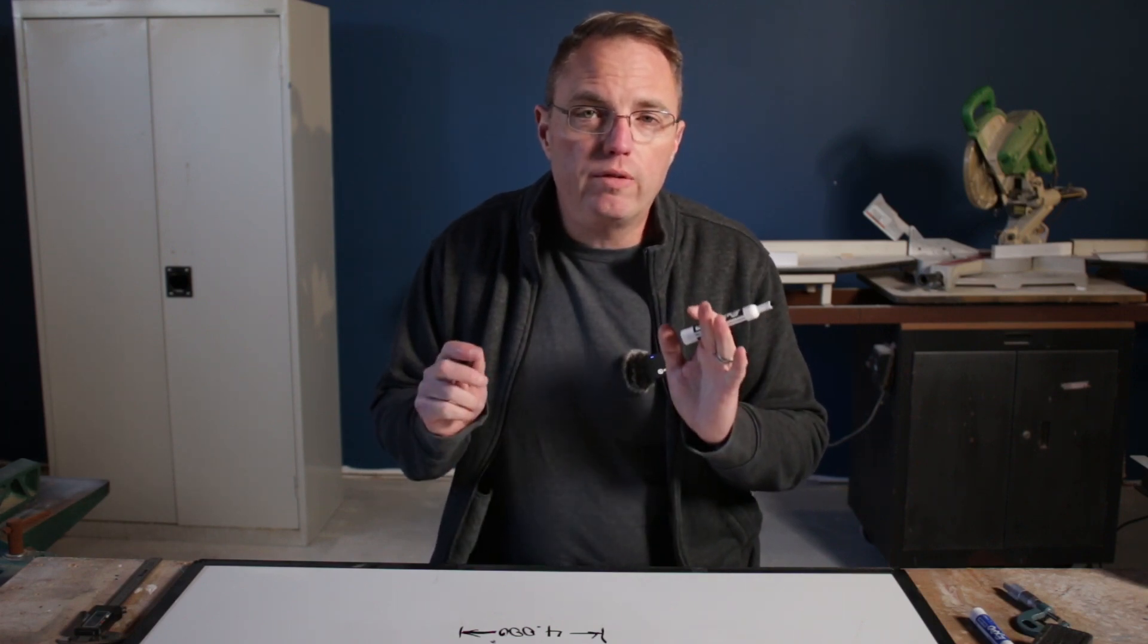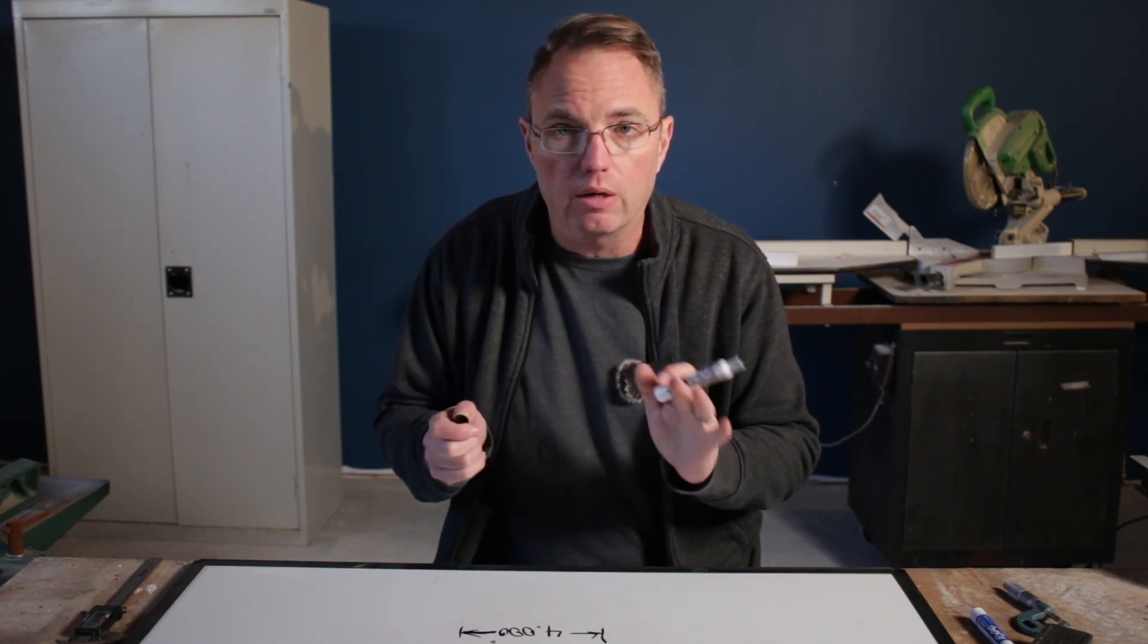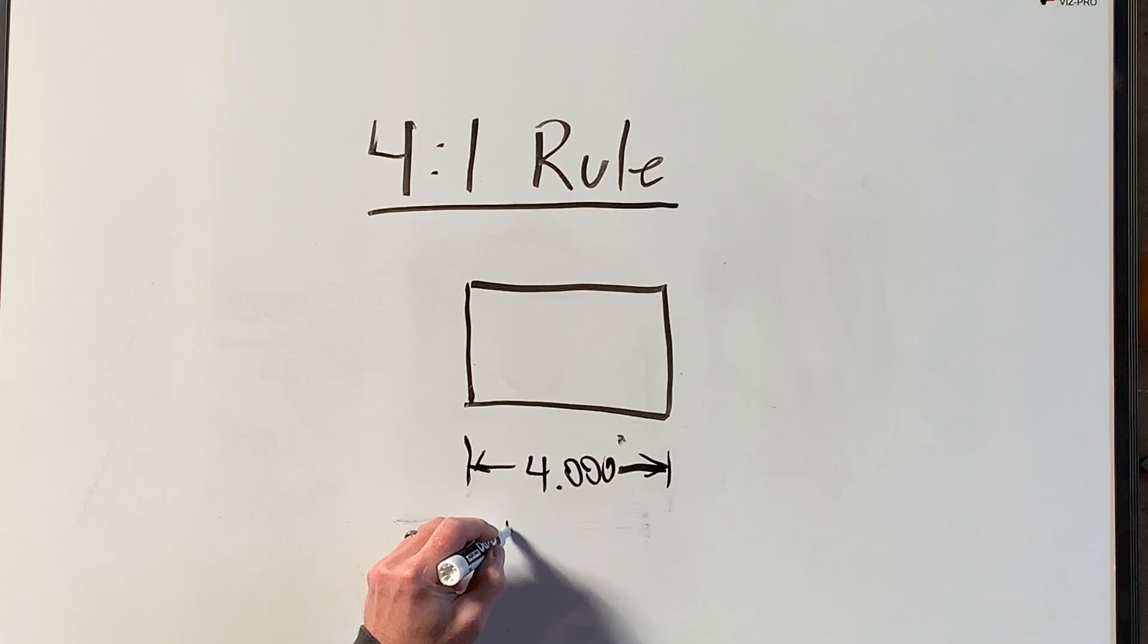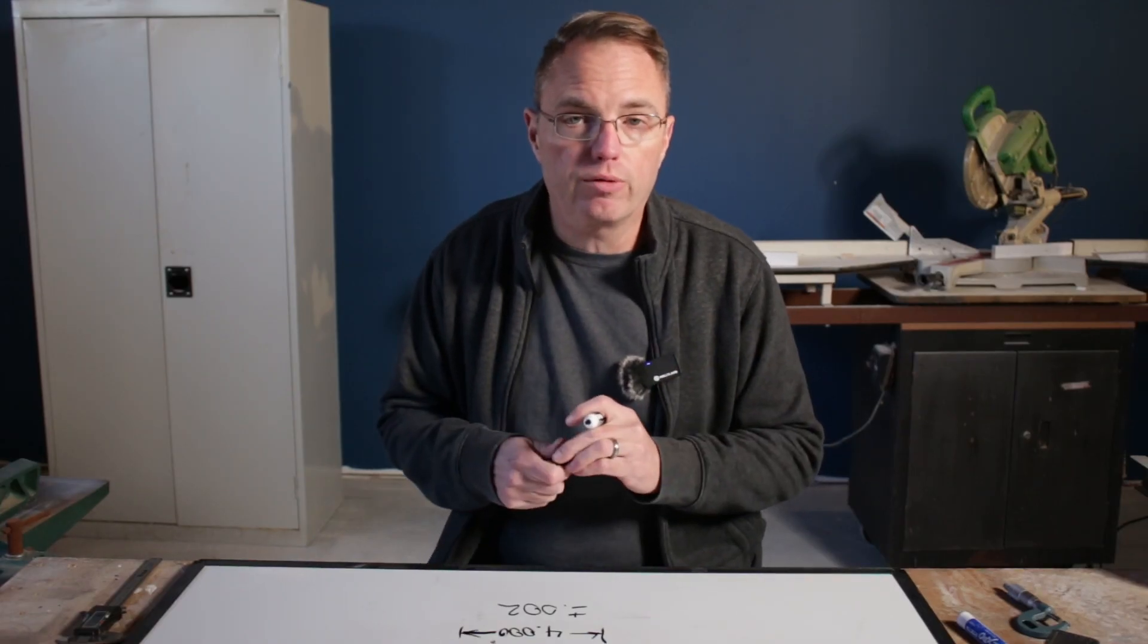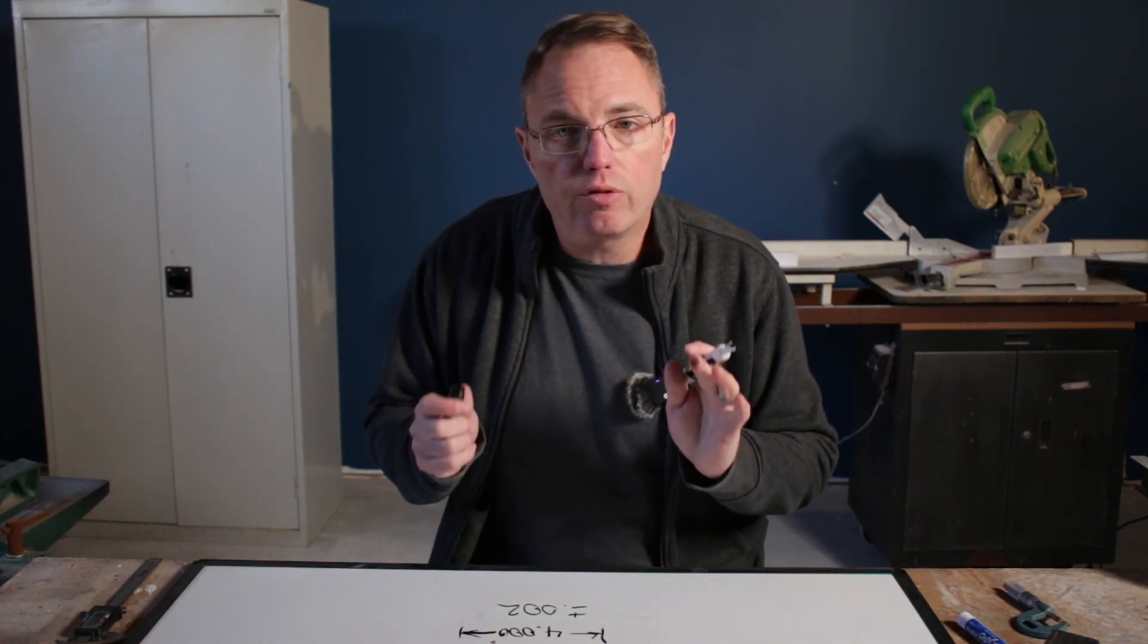You always have a tolerance associated with that dimension because nothing's perfect in this world. Everything has a tolerance, so you will normally see a tolerance plus or minus two thousandths or so. In this case, we'll use plus or minus two thou.